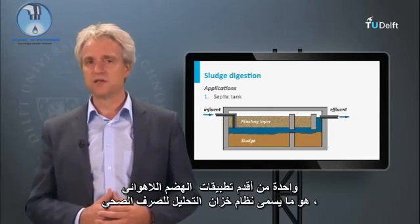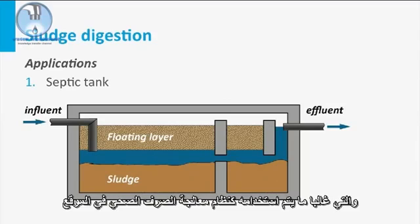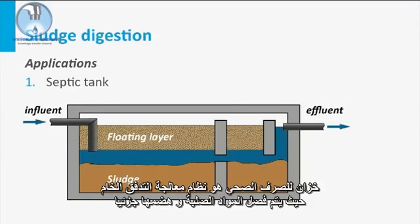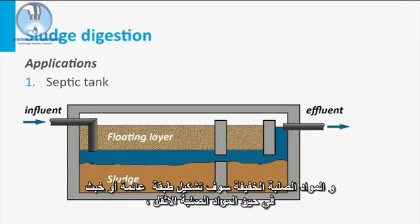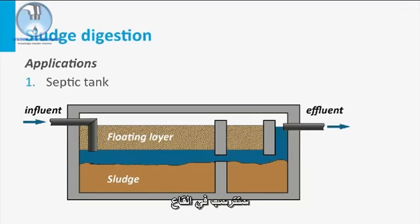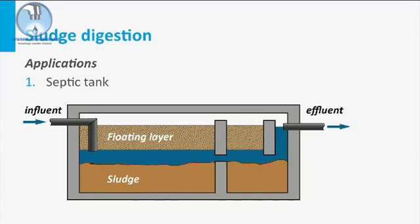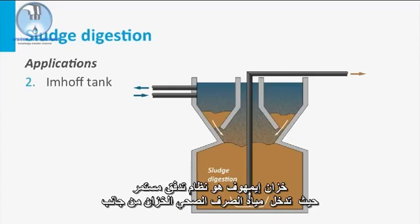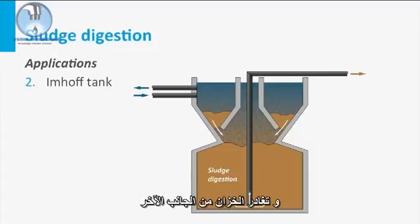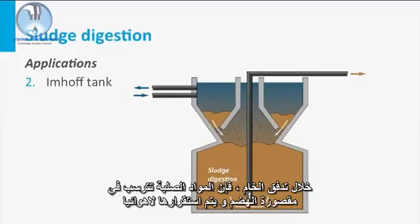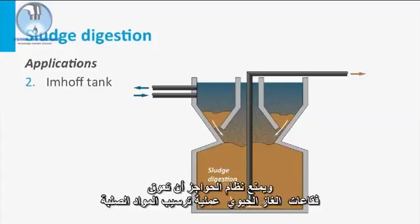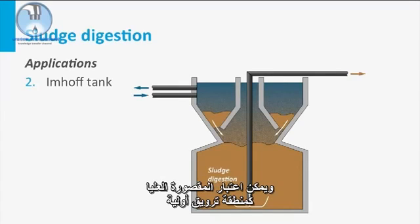One of the oldest applications of anaerobic digestion is the septic tank system, often used as an on-site sanitation system. A septic tank is a lateral flow treatment system in which solids are entrapped and partly digested. Light solids form a floating scum layer, while heavier solids settle to the bottom. The partly stabilized effluent is subsequently infiltrated into the soil or conveyed for further treatment. The Imhoff tank is an improved septic tank for larger flows.